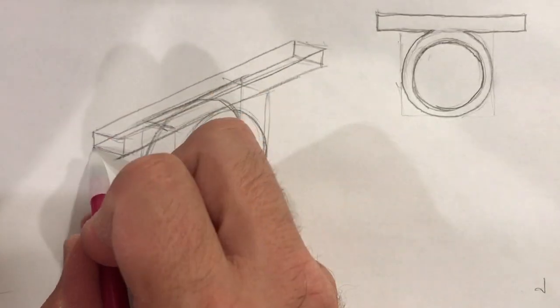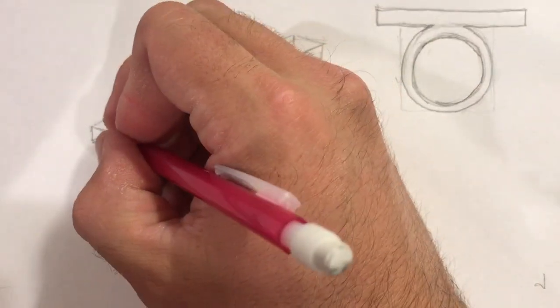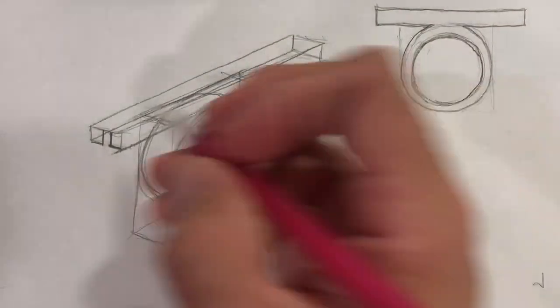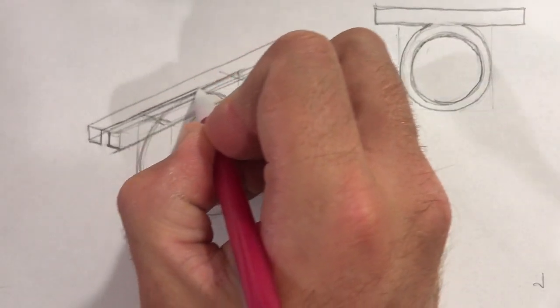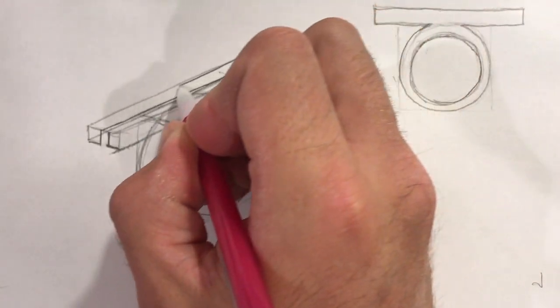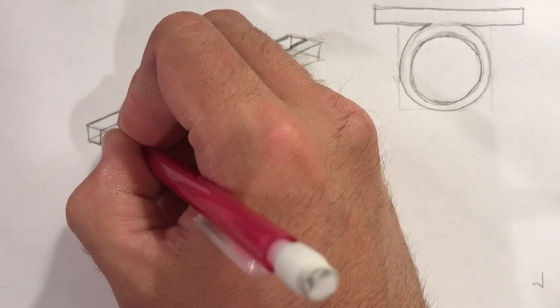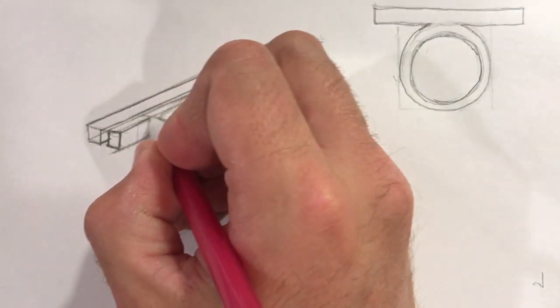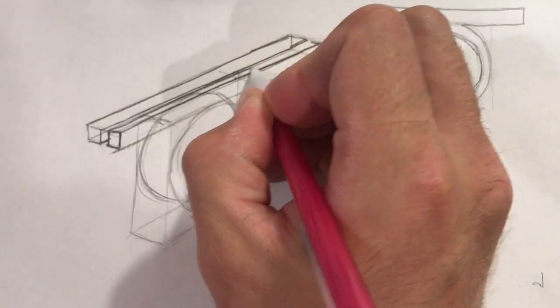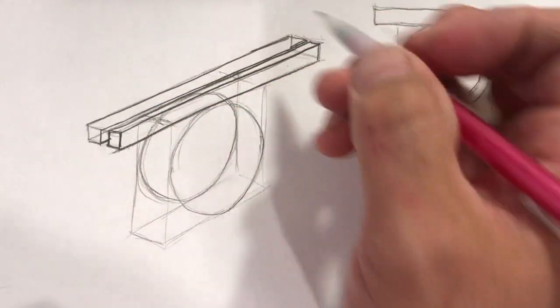But notice right here, I'm actually going to erase one of the lines. So it's going to be like that, just like that. So then I'm going to take this bar and draw it a little bit darker, and then this one. Like that.